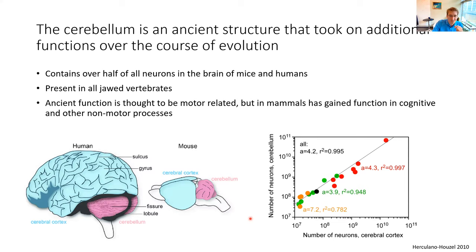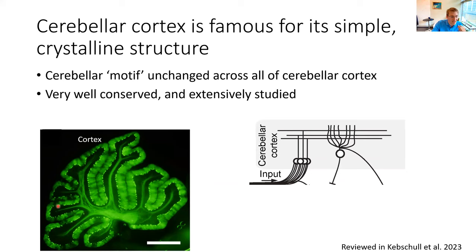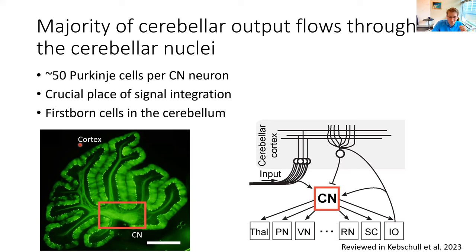When we talk about the cerebellum, a lot of us study the Purkinje cells and cerebellar cortex. In this talk, I would like to make the case for the often somewhat overlooked cerebellar nuclei. They should really be considered the principal neurons of the cerebellum, because essentially none of the computations performed by the cerebellar cortex mean anything to the rest of the brain before they get integrated in the cerebellar nuclei and then routed out to other brain regions.